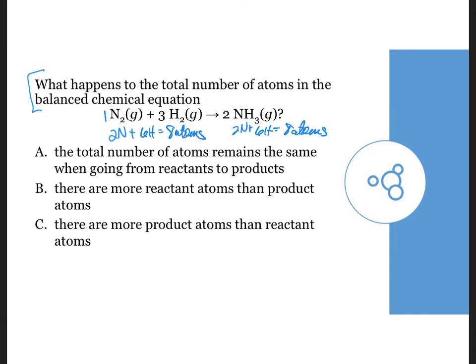So the whole reason why a balanced chemical equation works is because of the law of conservation of mass, and this just says that matter is neither created nor destroyed, and the whole idea of balancing it is that we get the same number of atoms when going from reactants to products. If we didn't have the same number of atoms on the reactant and product sides, then our equation wouldn't be balanced.